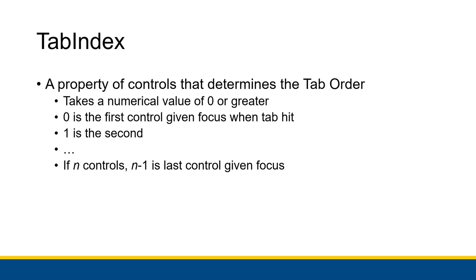Tab index takes a numerical value of zero or greater, where zero is the first control given focus when the user hits tab. The list starts counting at zero — zero is the first item, one is the second, two is the third, and so on. That's a whole computer science thing; in computer science you start counting at zero. So the first control to get focus when you hit tab has a tab index of zero — that's really important, don't forget that.